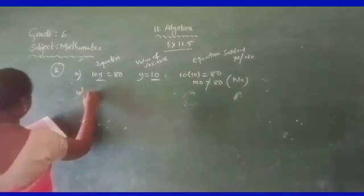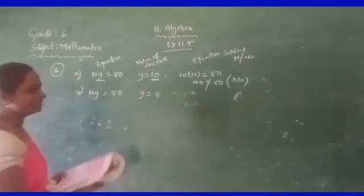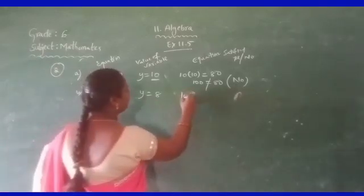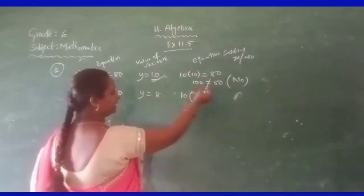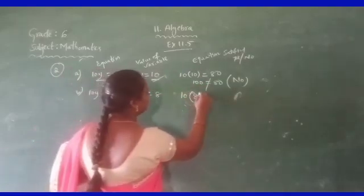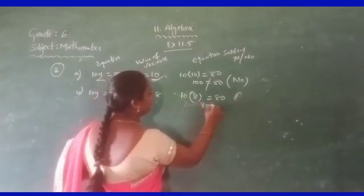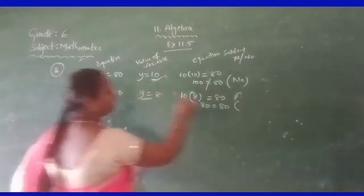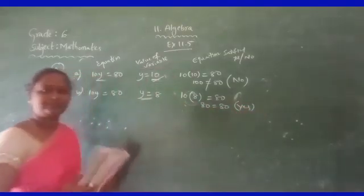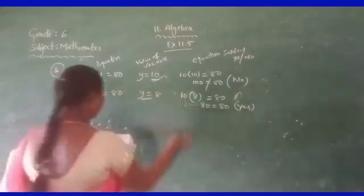Similarly, b: 10y is equal to 80, and y is equal to 8. Substitute: 10 times 8 is 80. Is 80 equal to 80? Yes, it is satisfied. So y equals 8 is the solution of this equation.